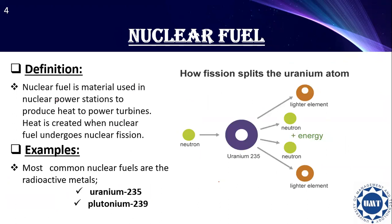Now we see the definition of nuclear fuel. It is a material used in nuclear power stations to produce heat to power turbines. It is created through nuclear fission. In this reaction, when a neutron is absorbed by uranium, lighter elements are formed and neutrons are also emitted with high energy. Examples include uranium isotope U-235 and plutonium isotope Pu-239.